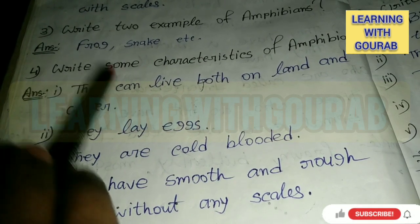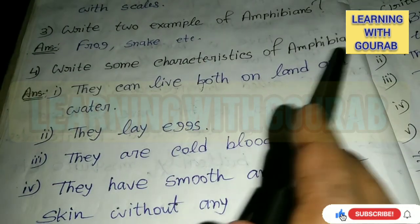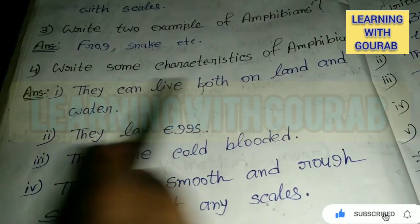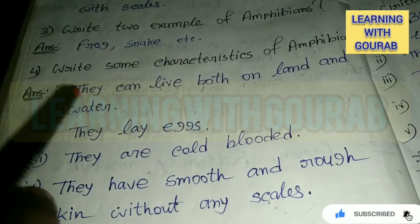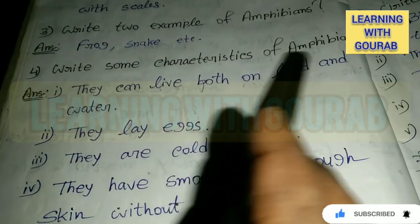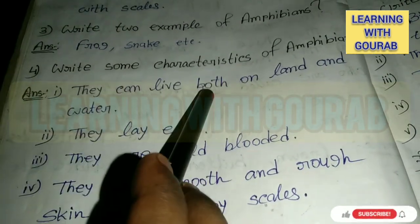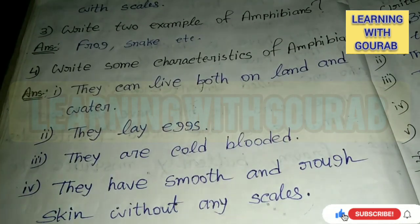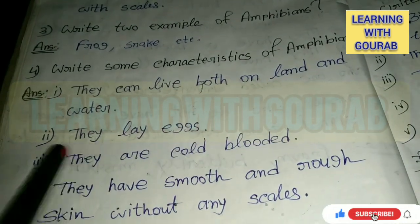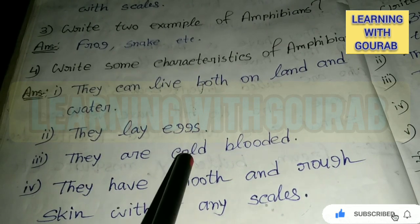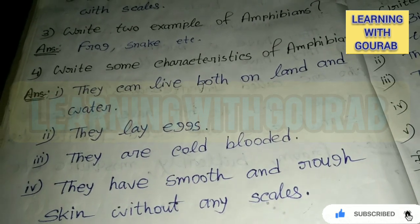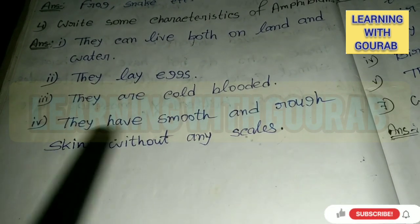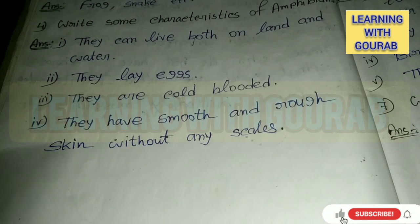Next question: Write some characteristics of amphibians. Answer: They can live both on land and water. They lay eggs. They are cold-blooded. They have smooth and rough skin without any scales.